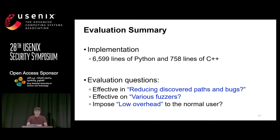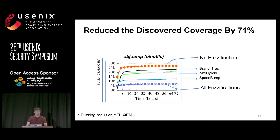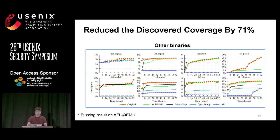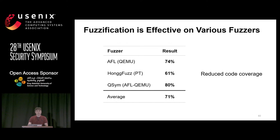We implemented fuzzification using Python and C++. In our evaluation, we measured the reduction in discovered paths and bugs, effectiveness across various fuzzers, and overhead. Overall, we reduced discovered coverage by 71%. Compared to the original binary (orange line), the fuzzified binary (blue line) shows significant reduction in discovered paths. Testing on different binaries and various fuzzers yielded similar results.